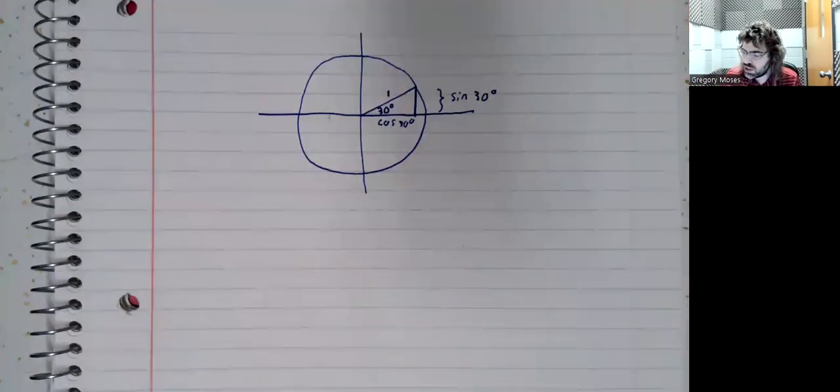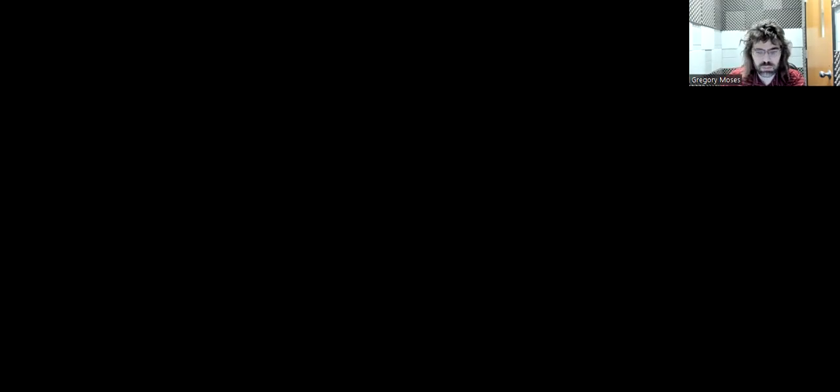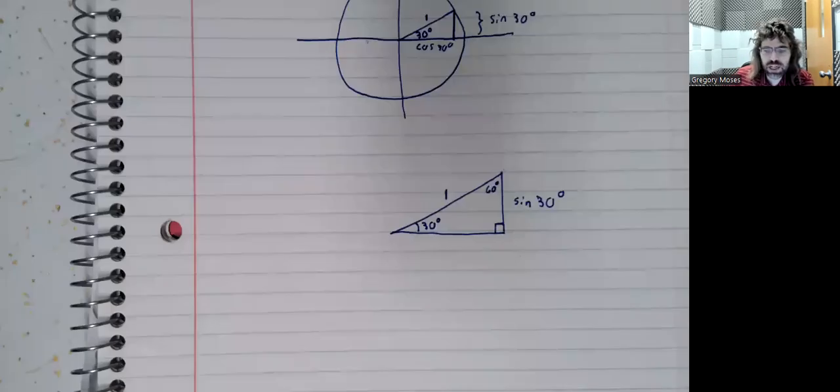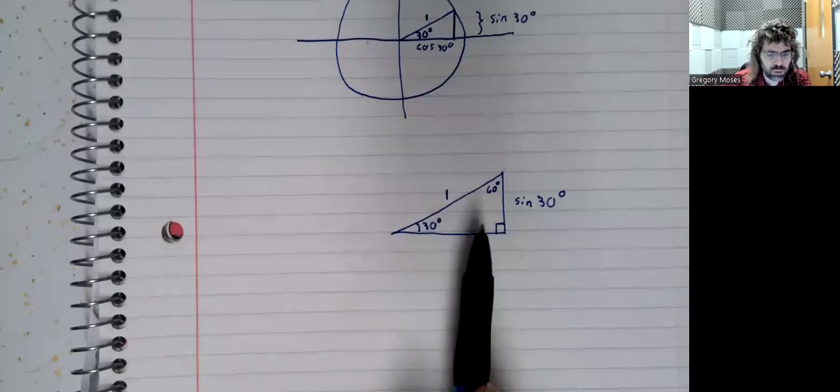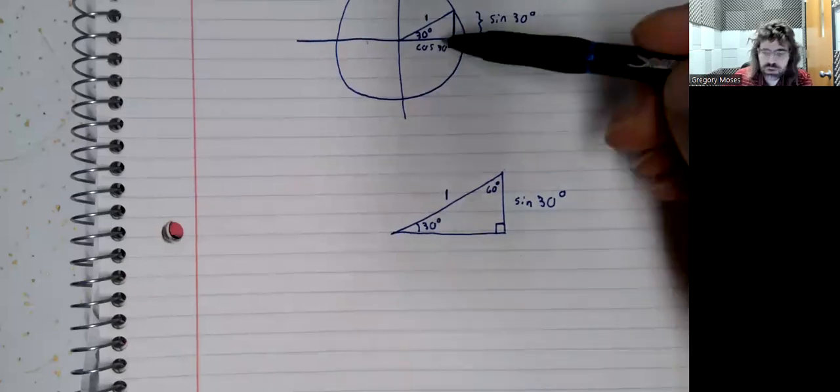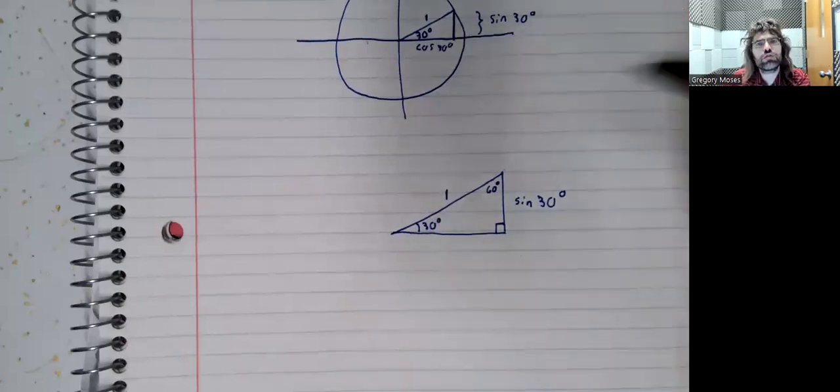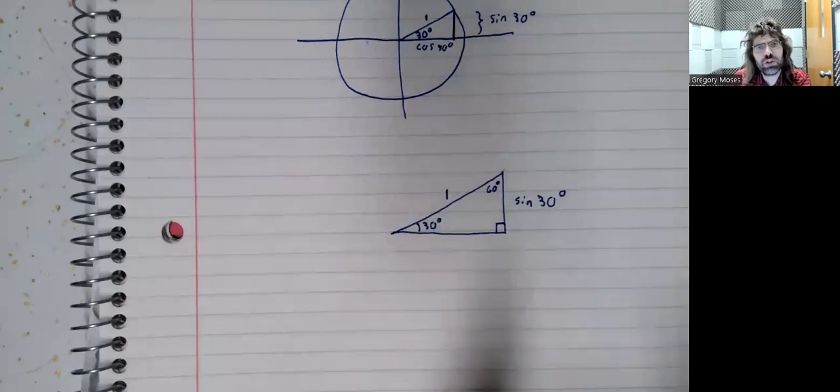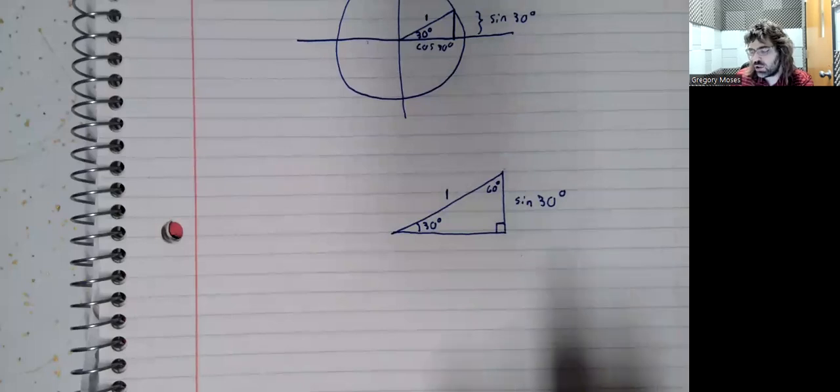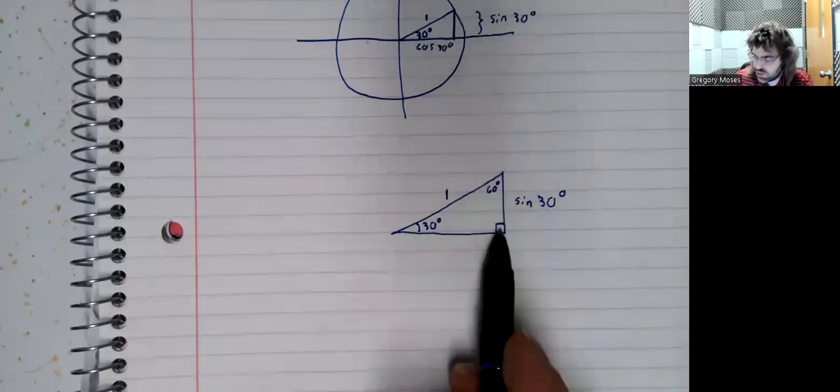Let's take this right triangle and copy it down here. We don't need this cosine at the moment. Make the observation: angles in a triangle add up to 180 degrees. If this is 90 and this is 30, then this is 60.